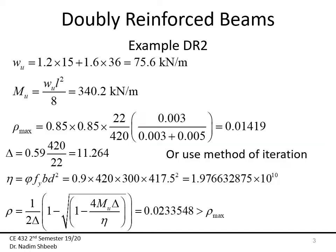To start, we find the ultimate load: 1.2 times dead load plus 1.6 times live load, giving 75.6 kN/m. Since this is a simple beam, Mu = Wu·L²/8, which equals 340.2 kN·m. To decide whether we need a doubly reinforced beam, we first find rho_max, calculated as 0.85·β1·F'c/Fy · (ε_ultimate / (ε_ultimate + 0.005)).